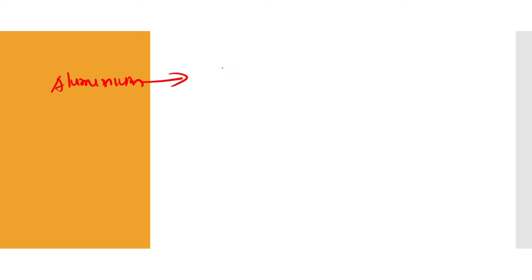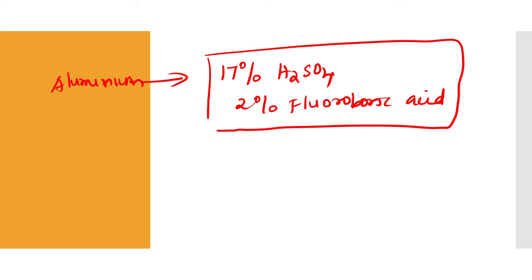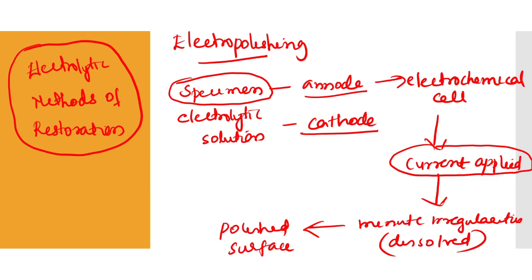For aluminium, the solution used is 17% H₂SO₄ (sulphuric acid) and 2% fluoroboric acid. This concludes the reagents used for the electrolytic method of restoration.